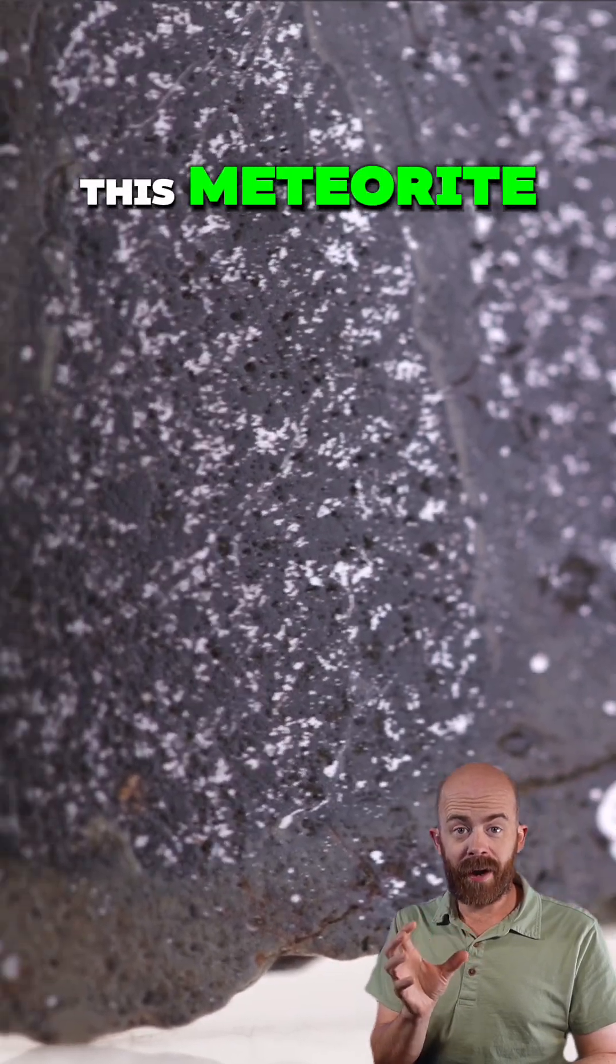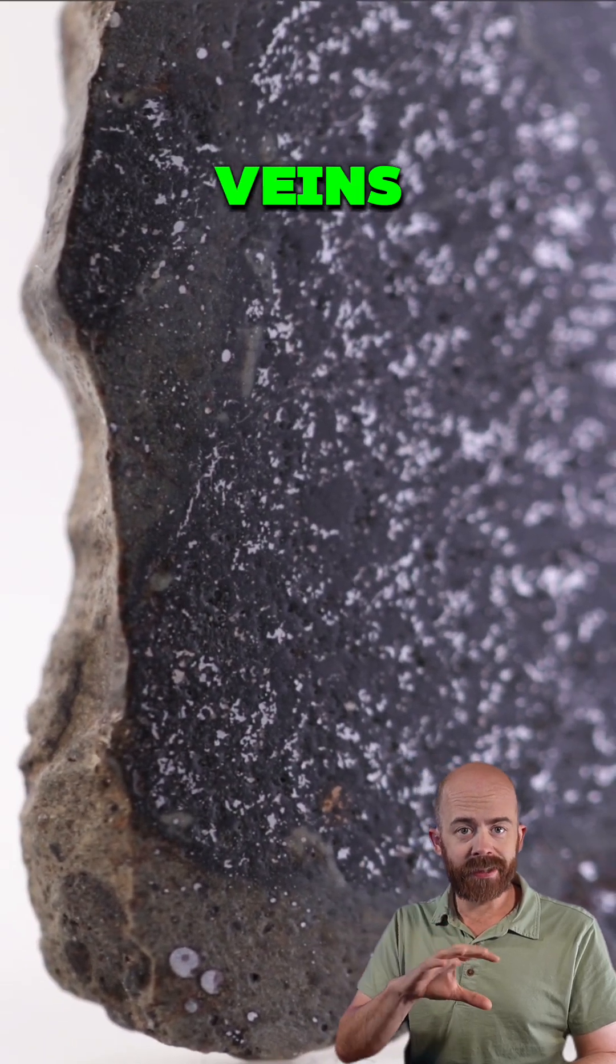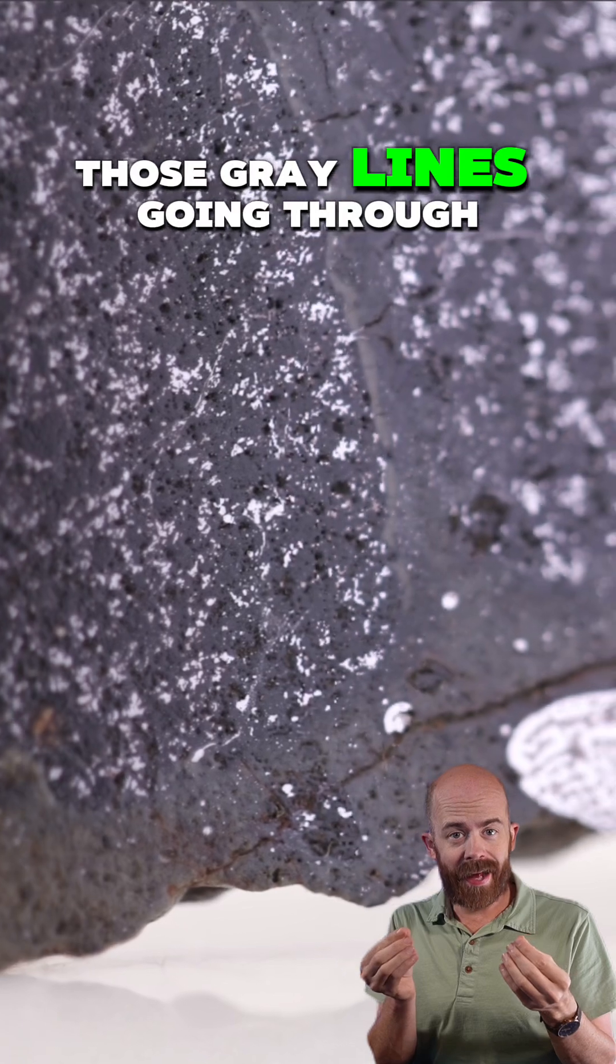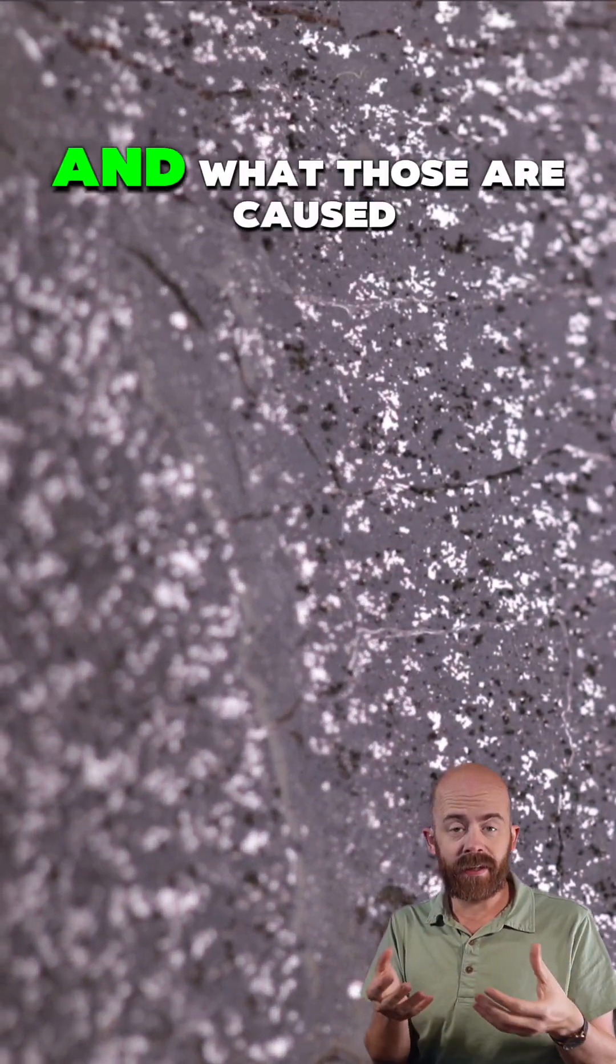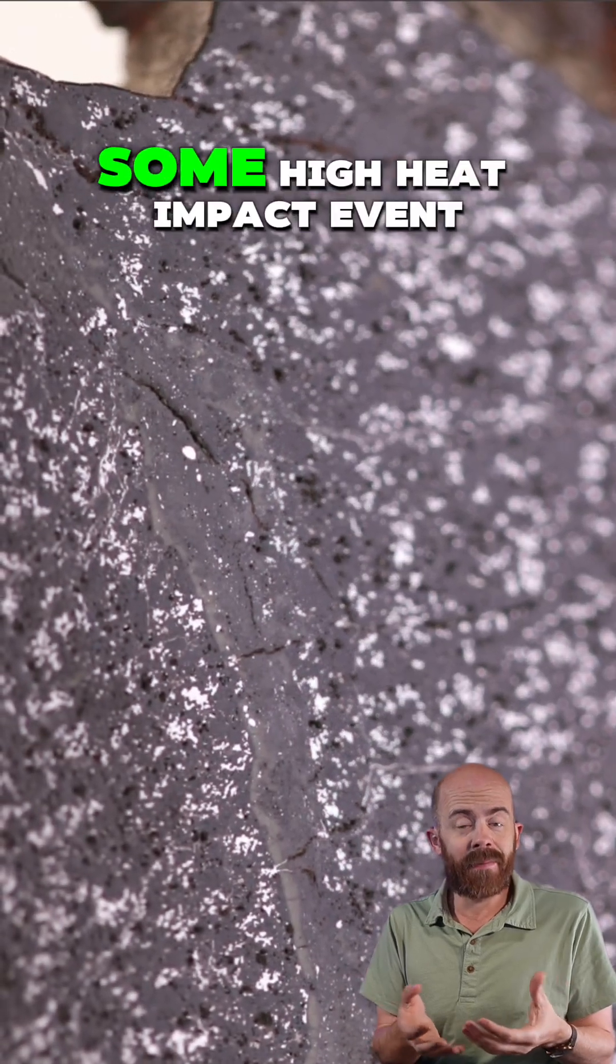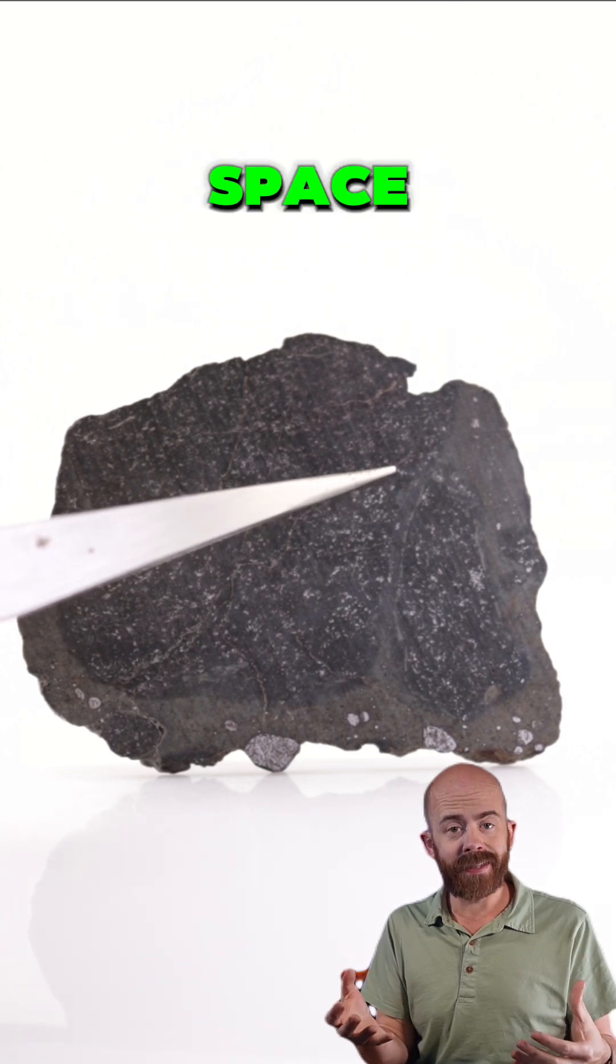While all the metal in this meteorite makes it look really neat, I think the star of the show here are the impact melt veins throughout it. We see those gray lines kind of going through it. Those are the impact melt veins, and what those are caused by is essentially some high heat impact event, either when the stone was ejected from its parent body or some other impact in space.